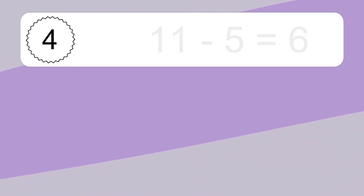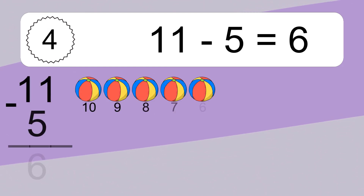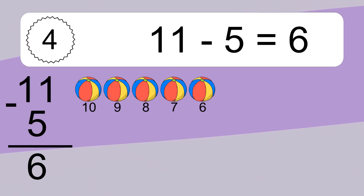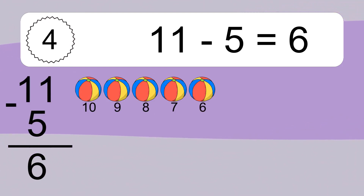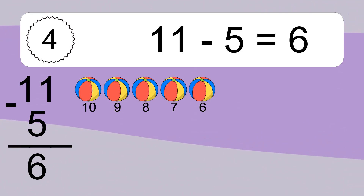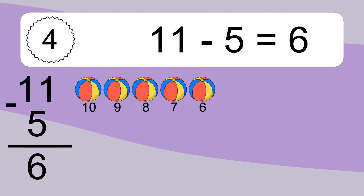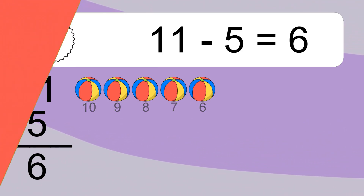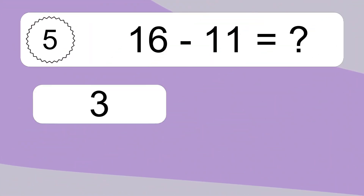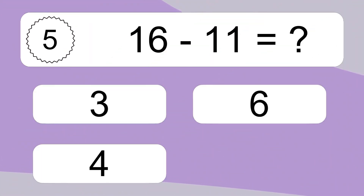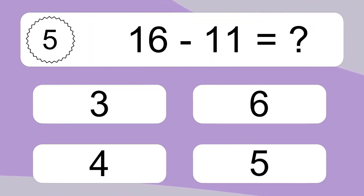11 minus 5 equals what? 11 minus 5 equals 6. Let's count it: 10, 9, 8, 7, 6.